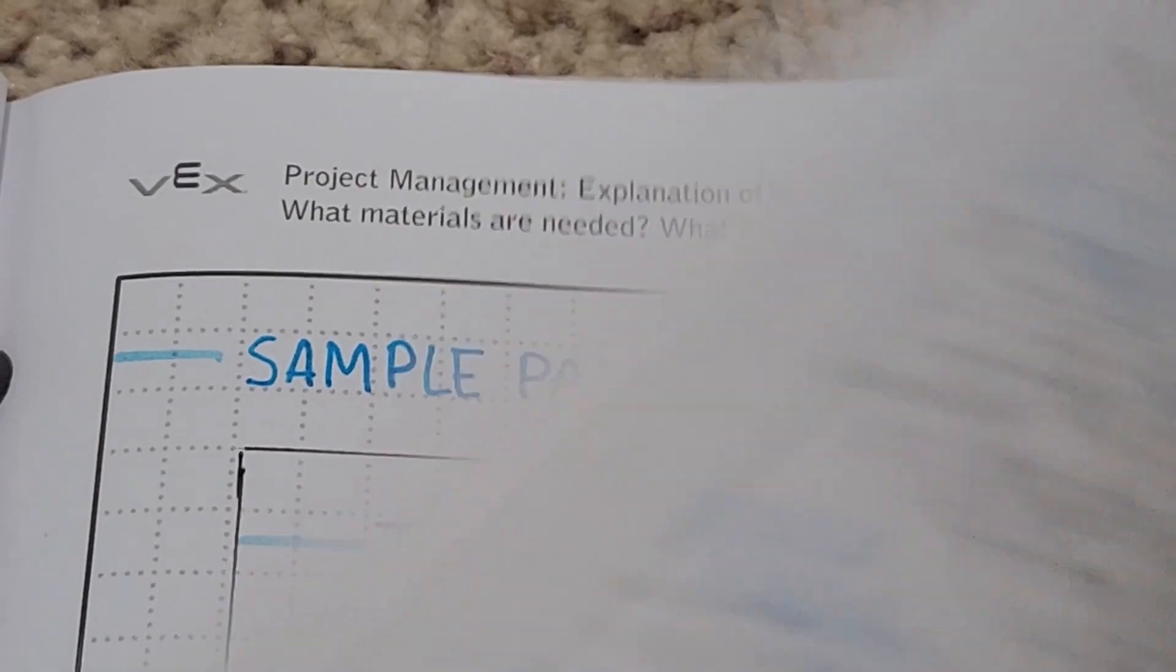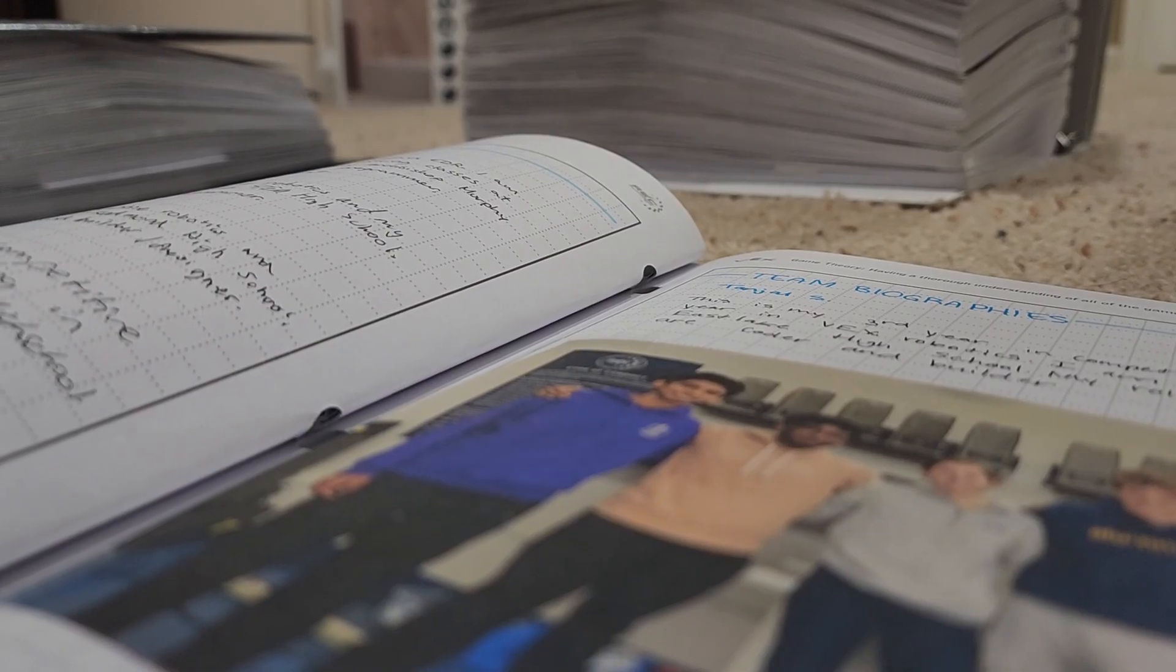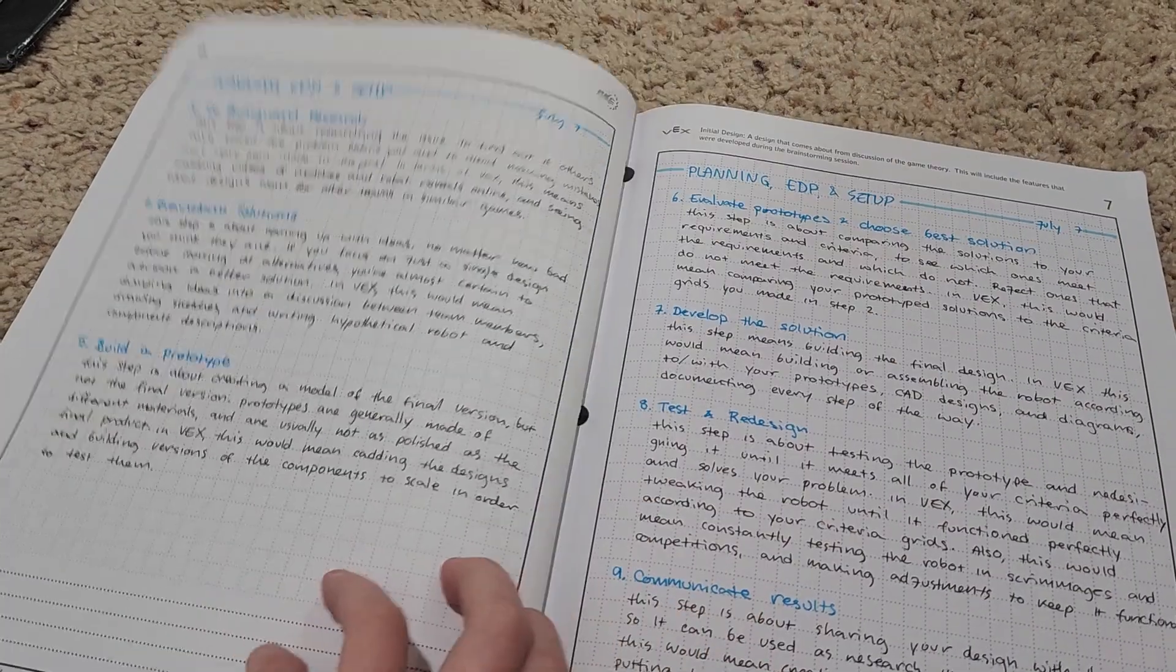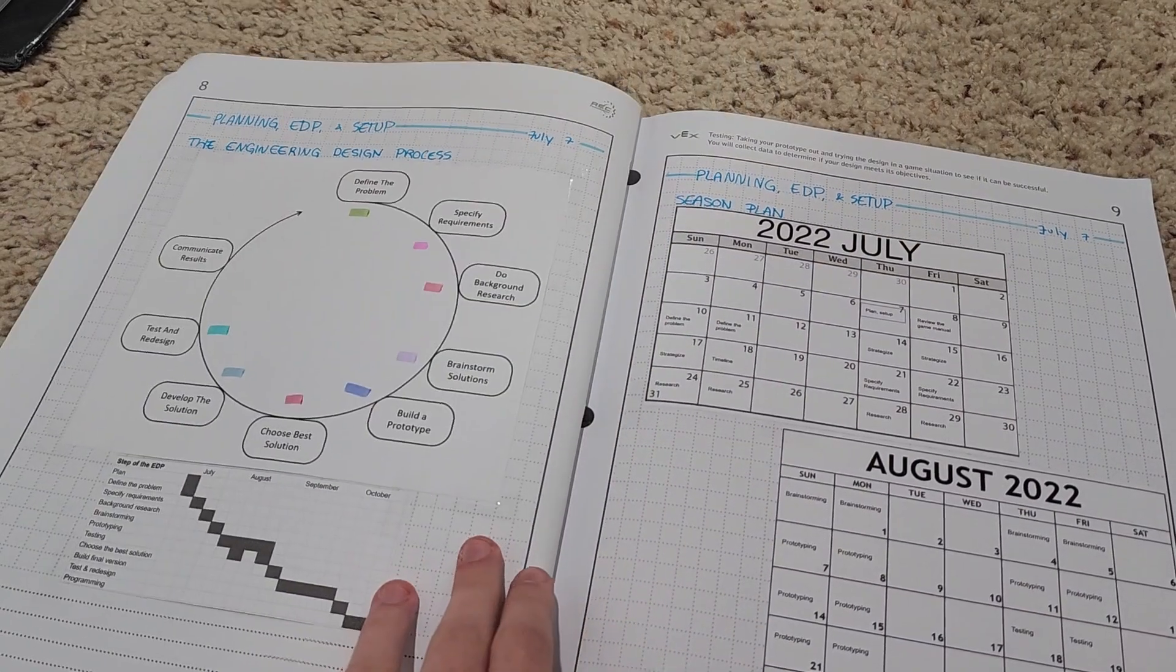So, a little after the title page, I have team biographies. That's pretty important, since you want to identify who's going to be on the team, so the judges know who you guys are. After that, we're just setting up the year a little bit with goal setting, identifying the engineering design process, and planning out how we want our year to go.